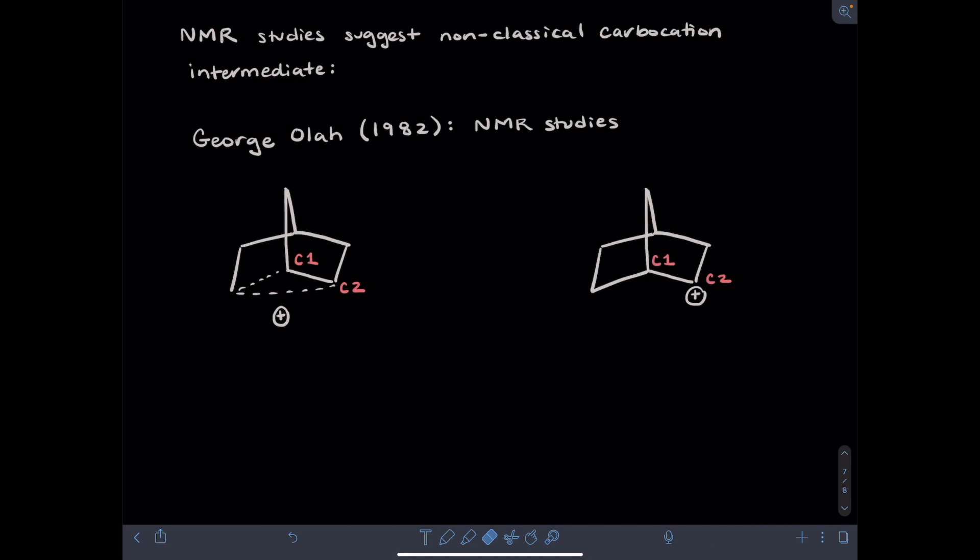In order to think about what the NMR spectra would look like for these two different compounds, I want to focus on two carbons in particular, which I'm labeling carbon 1 and 2 in each structure. In the structure on the right, carbon 2 is a carbocation, and carbon 1 is not a carbocation, so they are clearly distinct.